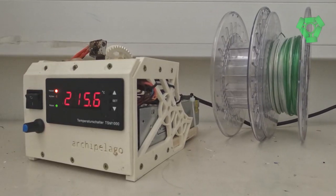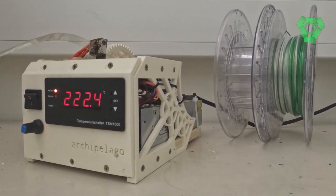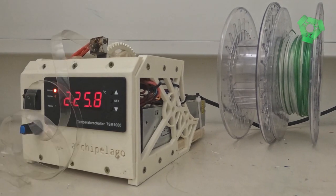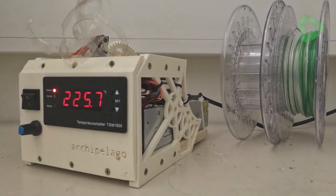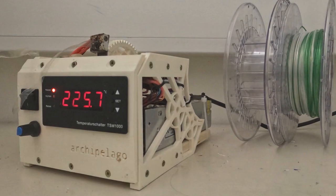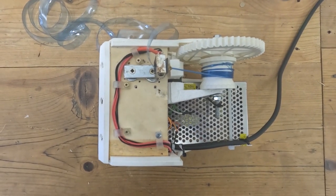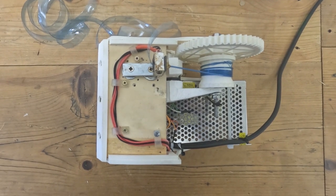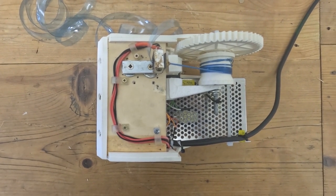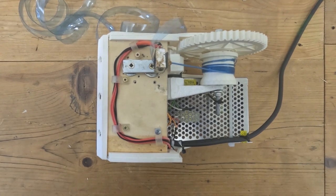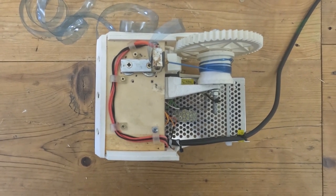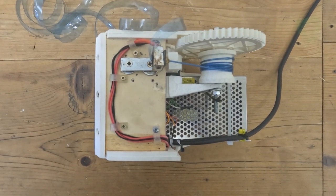On the archipelago filament extruder, set the thermocontroller's on-setting to 220.3 and its off-setting to 220.7 degrees celsius. Once it has heated up, the thermocontroller's relay will turn on and off when it reaches those temperatures, leaving the temperature to fluctuate slightly outside of that temperature range from about 215 to 228 degrees celsius.